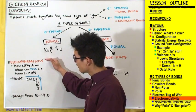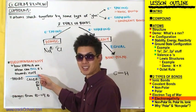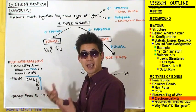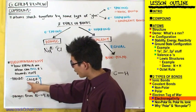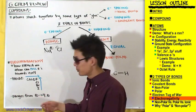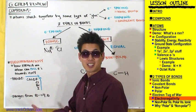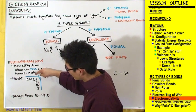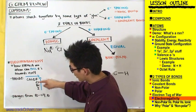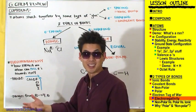Electronegativity is how strong an atom can pull electrons towards itself. The general trend on the periodic table is that as you go to the right and as you go up, electronegativity increases. So fluorine is more electronegative than oxygen, which is more electronegative than nitrogen, which is more electronegative than carbon. Similarly, fluorine is more electronegative than chlorine, which is more electronegative than bromine, which is more electronegative than iodine.